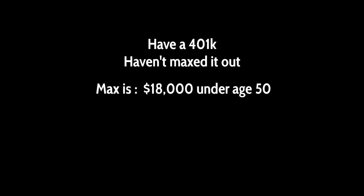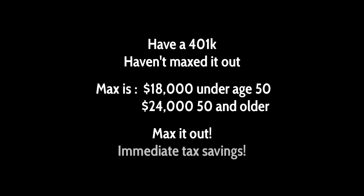Number five: 401(k) max out. If you're working and have a 401(k) and you haven't maxed it out—that's $18,000 under age 50 and $24,000 for 50 and older—max it out this month. It's an immediate tax savings right now and makes a lot of sense.